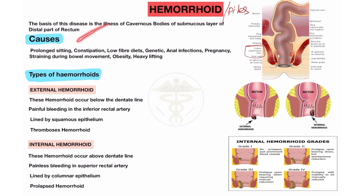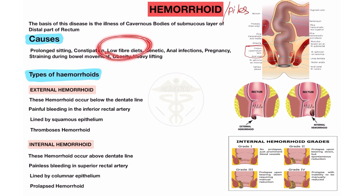The causes of hemorrhoid are many. Prolonged sitting — when a person sits for 6 to 8 hours for any business, it causes hemorrhoids. Constipation — when people have long-term constipation, it also causes hemorrhoids or piles. Low fiber diet — if a person doesn't take fiber in their diet, it also causes piles. Genetics — some cases have genetic causes. Anal infection — when anal infection occurs, it also causes hemorrhoids.